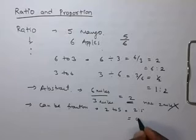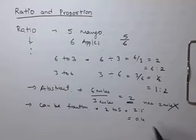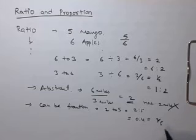So the ratio of 2 to 5 is 0.4 or 2 by 5. It is a fraction. So ratios can be fractions also.